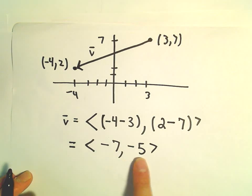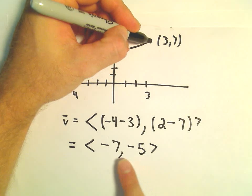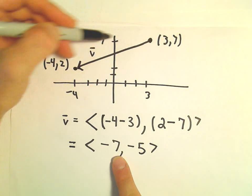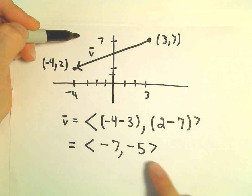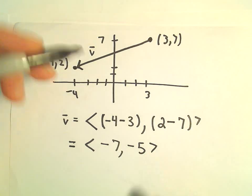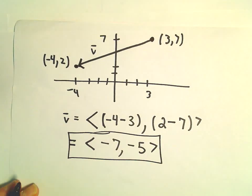And again, all this really says is if you're sitting at some point, what have you done? You've gone 7 units to the left, and then you've gone 5 units downwards. That's all that's happened. So that's our position vector.